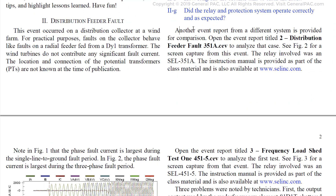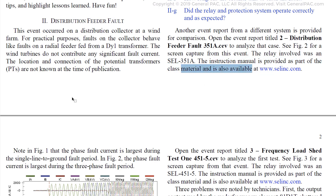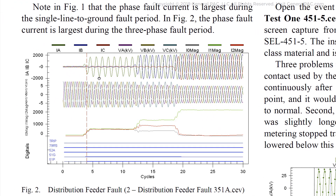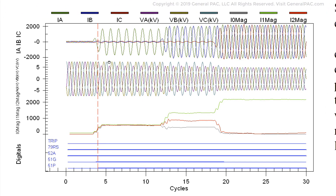In part 1 we actually went through and analyzed a particular waveform in much more detail and answered all of those questions. Now in part 2 we'll analyze this waveform and answer these questions. The setup says another event report from a different system is provided for comparison. The relay provided was the SEL 351A relay, which is a feeder relay.